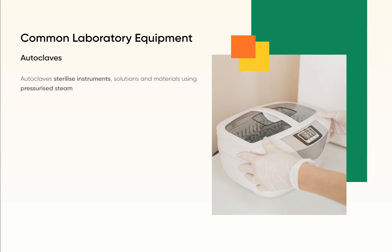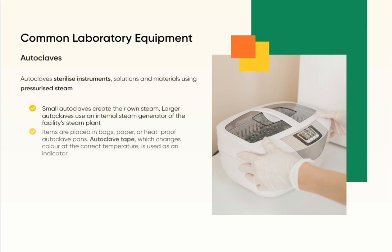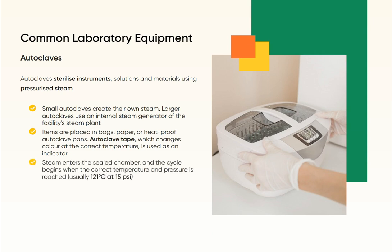Autoclaves sterilize instruments, solutions, and materials using pressurized steam. Small autoclaves create their own steam, while larger autoclaves use an internal steam generator or the facility's steam plant. Items are placed in bags, paper, or heat-proof autoclave pans. Autoclave tape, which changes colour at the correct temperature, is used as an indicator. Steam enters the sealed chamber, and the cycle begins when the correct temperature and pressure is reached — usually 121 degrees Celsius at 15 pounds per square inch.